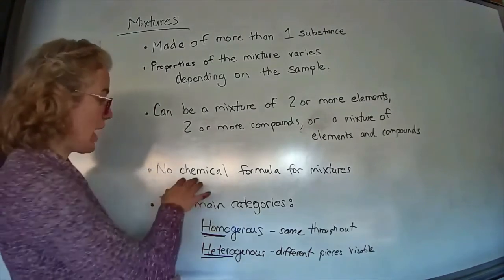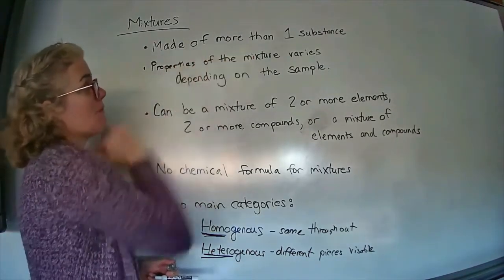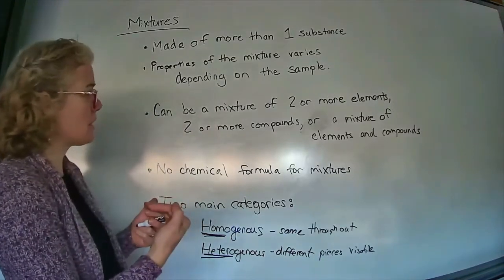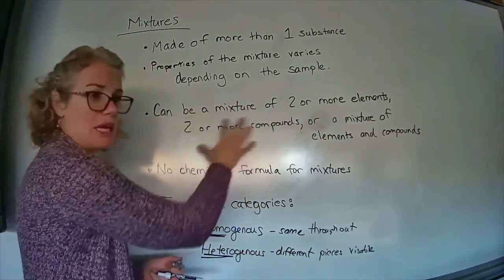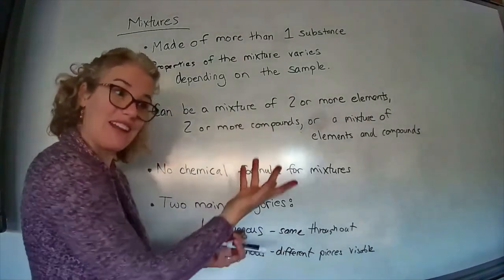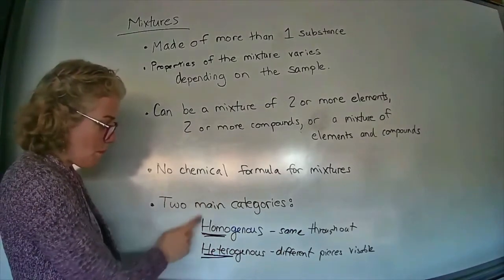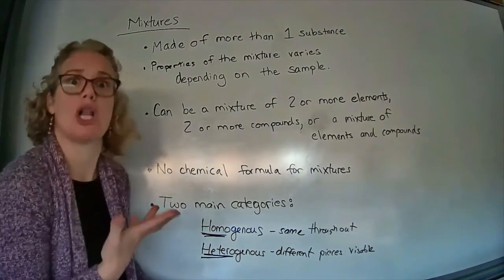So hopefully you now understand the main components of a mixture. You can't write a chemical formula for it because it's made up of more than one substance, and each part of it's gonna have different properties. It can be a mixture of a variety of other chemical words that we're used to using, and then there's two main categories, and it's based on what does it look like. Does it look the same, or do the pieces look different?